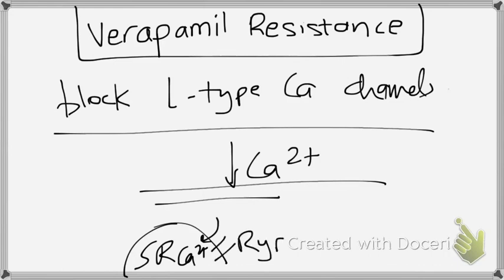And once it binds to that, the sarcoplasmic reticulum releases calcium into the intracellular space. And what that does is, it causes the contraction of the muscles, whichever muscles it's present in. For example, smooth muscle or cardiac muscle.